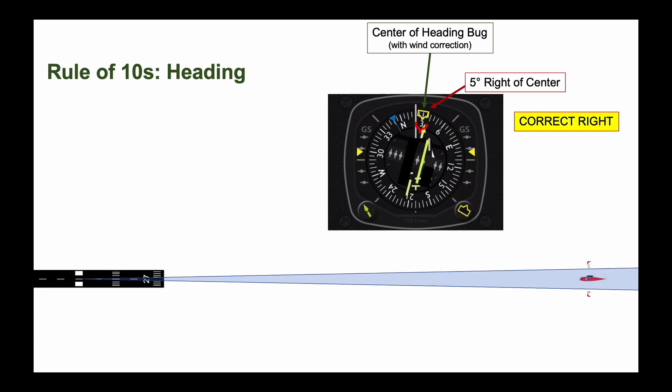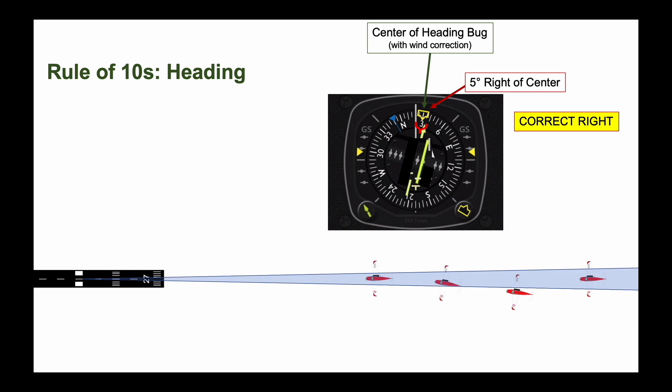If you need to correct to the right, turn no more than the heading under the right edge of the bug, and hold that heading until the needle centers. Now you can turn back to the center of the heading bug.